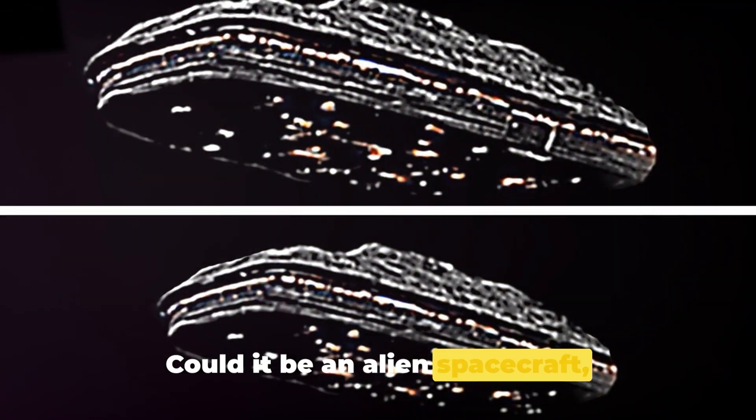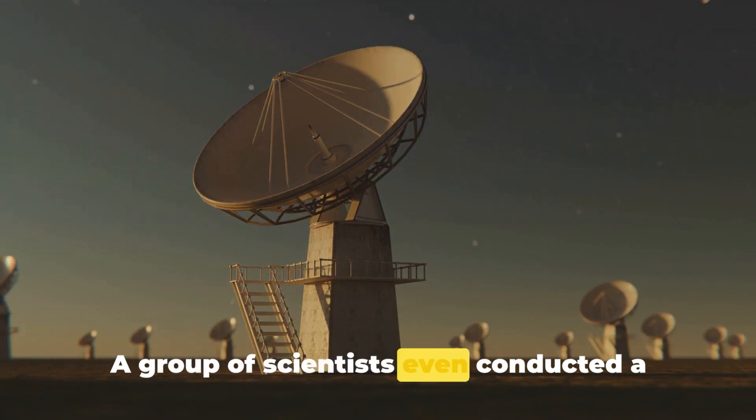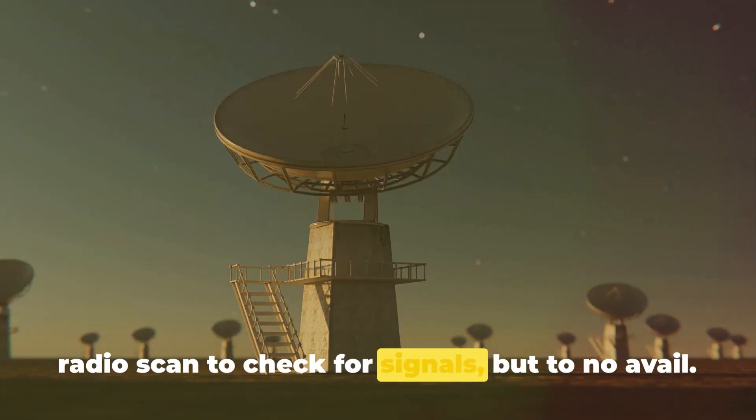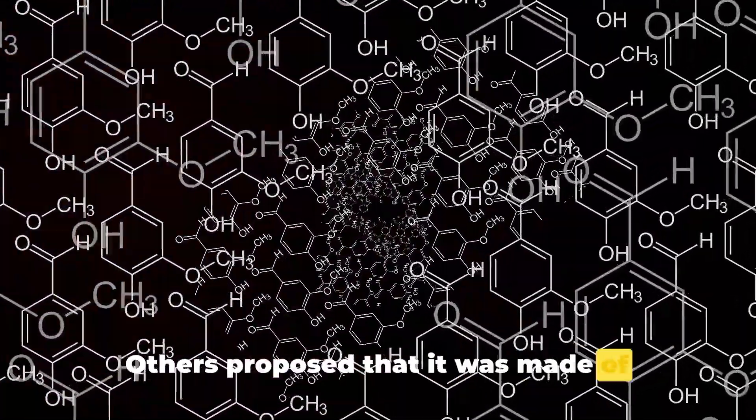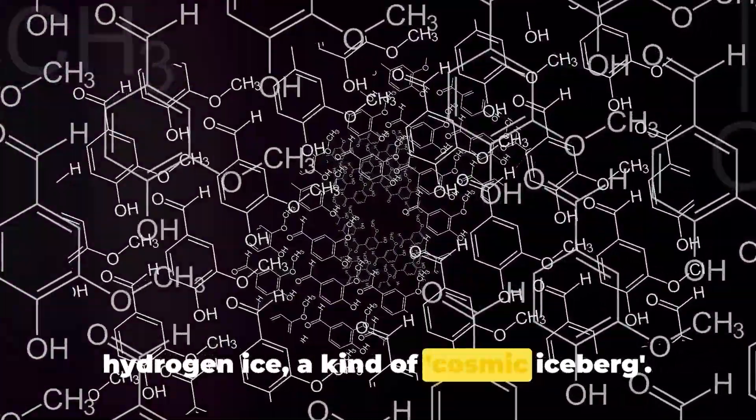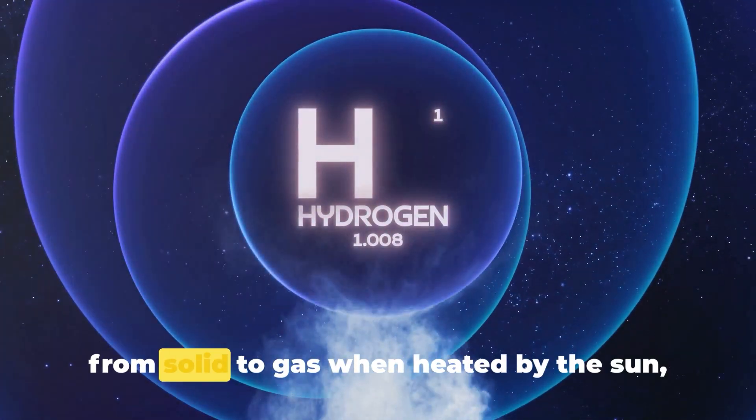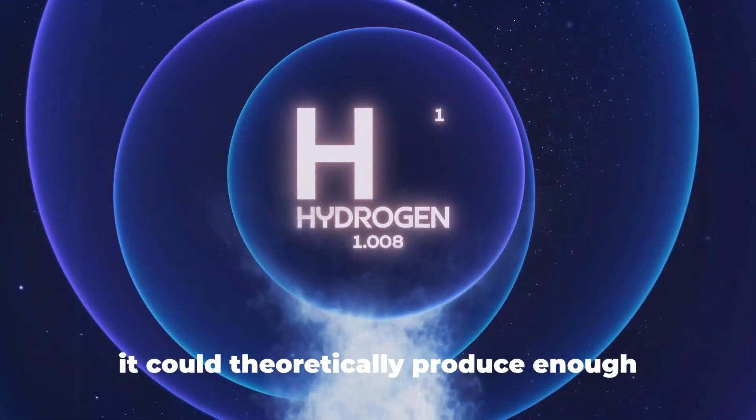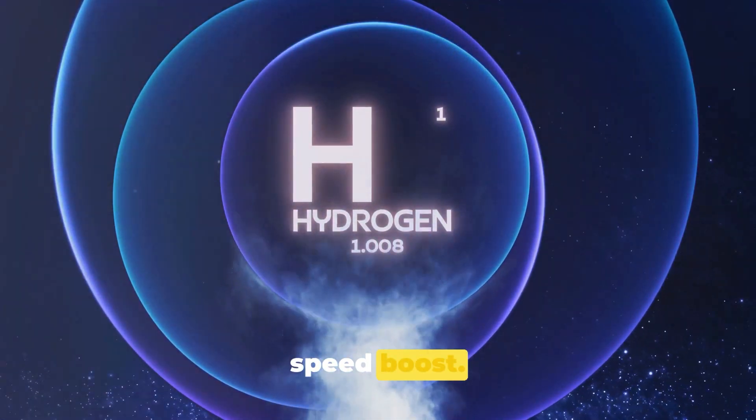Could it be an alien spacecraft, propelled by some advanced technology? A group of scientists even conducted a radio scan to check for signals, but to no avail. Others proposed that it was made of hydrogen ice, a kind of cosmic iceberg. As hydrogen sublimates, or turns directly from solid to gas when heated by the sun, it could theoretically produce enough thrust to explain Oumuamua's peculiar speed boost.